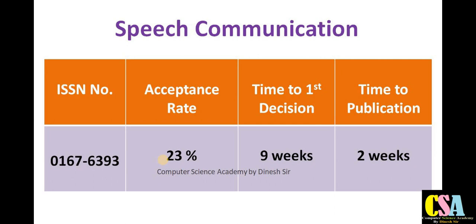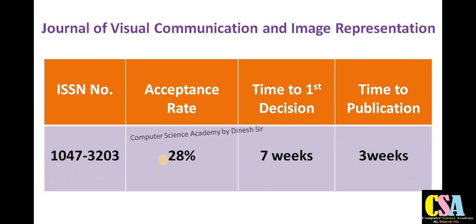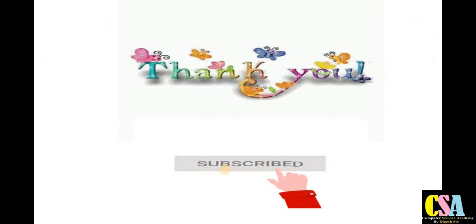The next category is the Journal of Visual Communication and Image Representation. This is a very good and fast publication journal — within ten weeks your research paper will get published. The acceptance rate is also very good at 28 percent. I suggest all of you explore this journal.